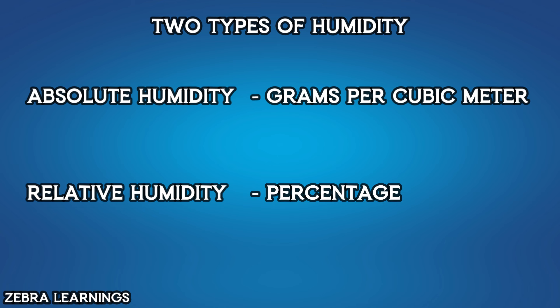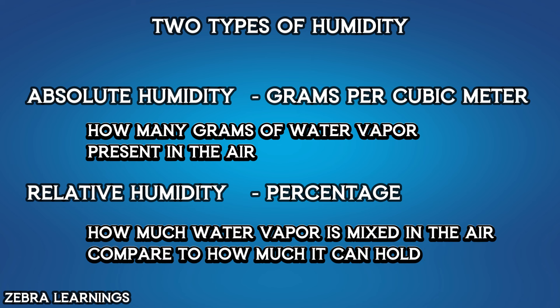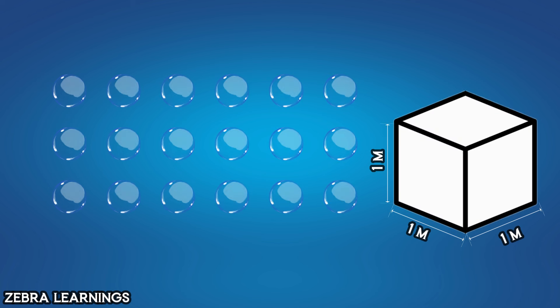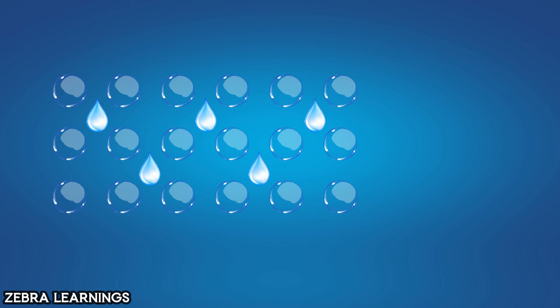Absolute humidity measures how many grams of water vapor are in the air. Relative humidity measures how much water vapor is mixed in the air compared to how much it can hold. For example, let's take a 1 cubic meter area. Absolute humidity measures the mass of water vapor mixed in the air within this 1 cubic meter area, in grams.